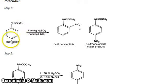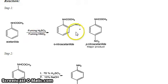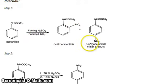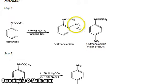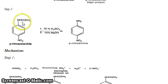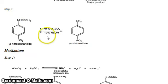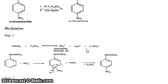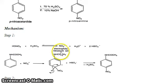The aim of this experiment is to prepare paranitroaniline from acetanilide. In step one, acetanilide reacts with fuming sulfuric acid and fuming nitric acid — nitration gives orthonitroacetanilide and paranitroacetanilide, with the major product being para due to steric reasons. In step two, paranitroacetanilide with 70% sulfuric acid and 10% sodium hydroxide gives paranitroaniline.